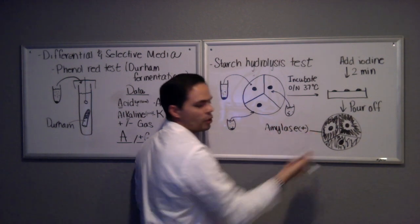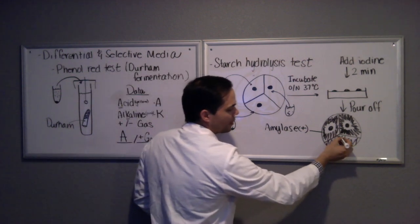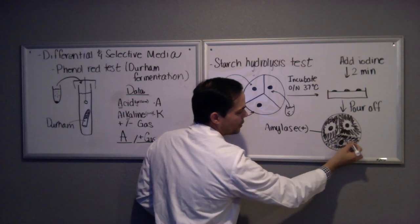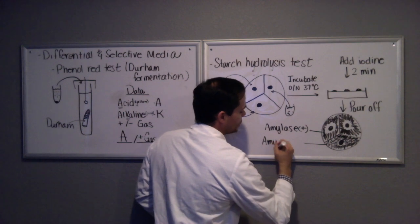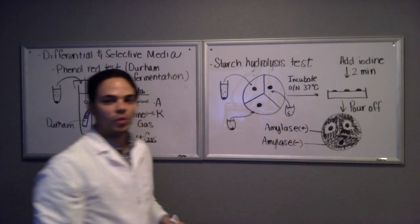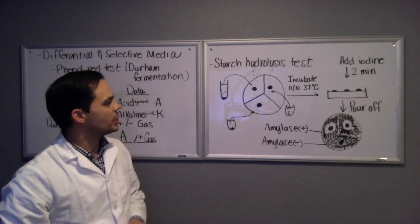This one does not have a clearing around it. Let's say that the starch is all the way around, there's no clearing. This one would be amylase negative. And that's how you would record the data for this particular test.